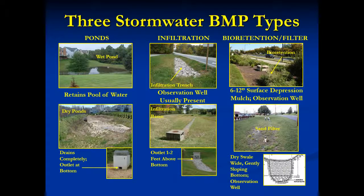Most BMPs fall into one of three categories: ponds, infiltration, and bioretention or filters. Most ponds are dry between storms, while the most effective retain a permanent pool of water. Infiltration measures usually have an observation well frequently made of white plastic pipe. Bioretention and filters have a surface depressed about a foot below the first point where runoff could overflow. Observation wells are common too.